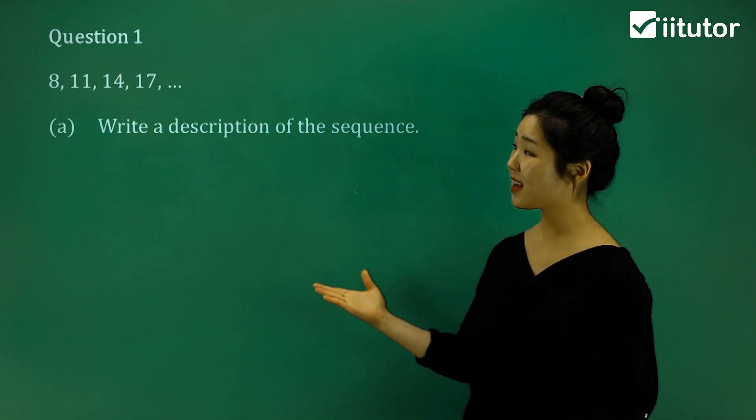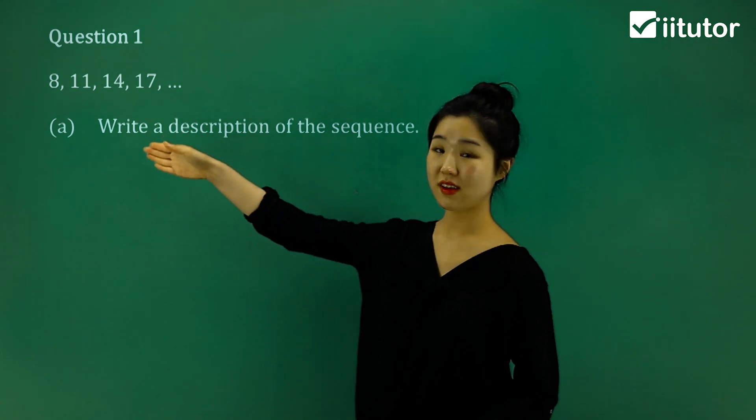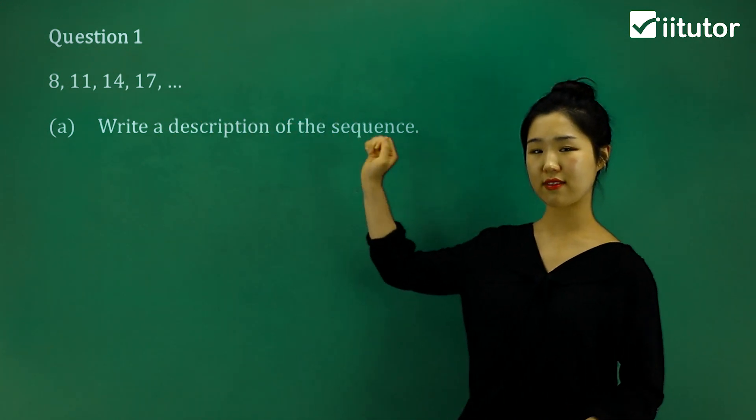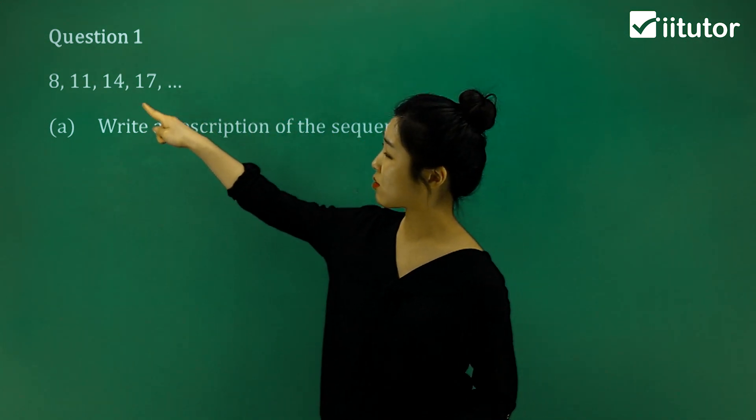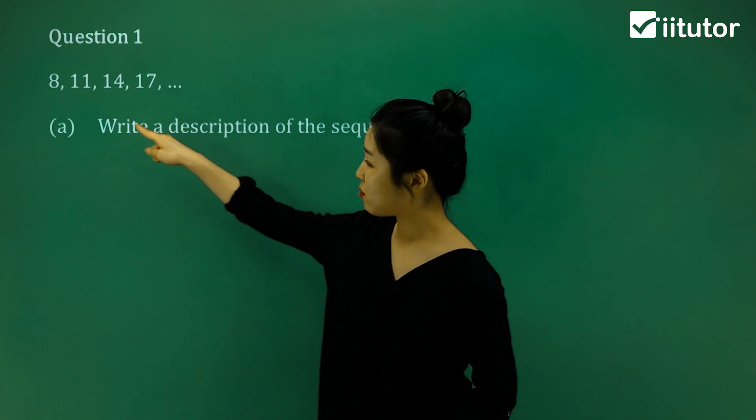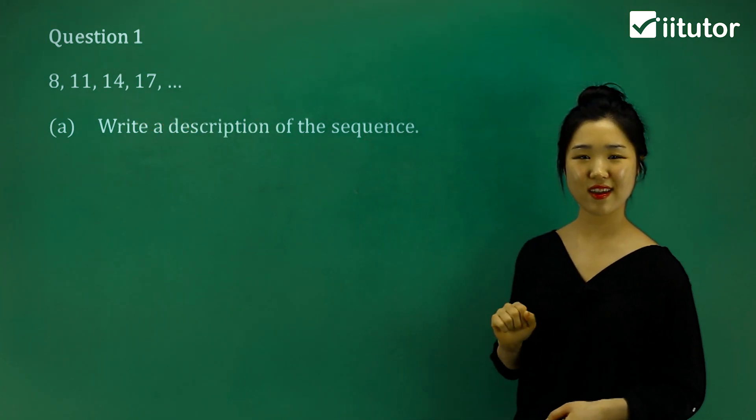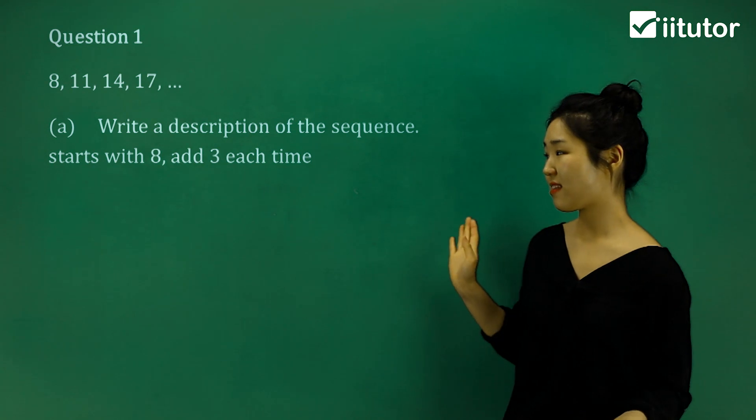So I can see clearly that the first number is 8, and then what are we doing to get every next number? I can see that 8 plus 3 is 11. 11 plus 3 is 14. 14 plus 3 is 17. So it kind of continues, doesn't it? So we can just say simply,